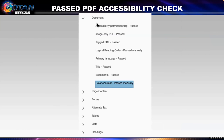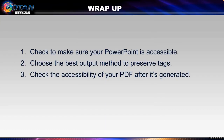The final results of my PDF accessibility check look good. Everything has passed under Document. Logical reading order passed manually. Color contrast passed manually. No issues in these categories. My document is accessible. So to wrap up, don't forget the three steps: first, check to make sure your PowerPoint is accessible; two, choose the best output method to preserve tags; three, check the accessibility of your PDF after it's generated.